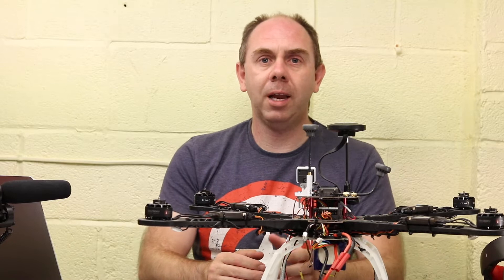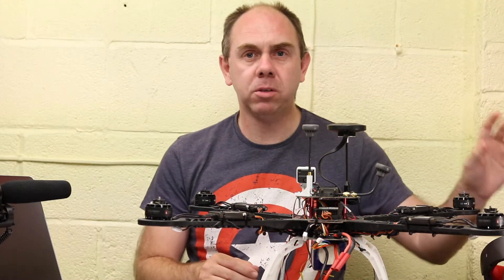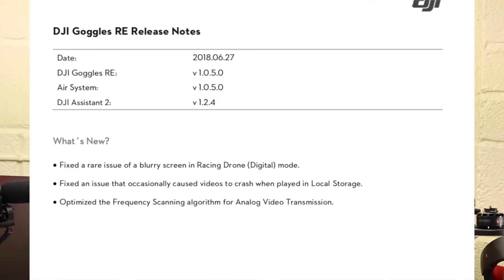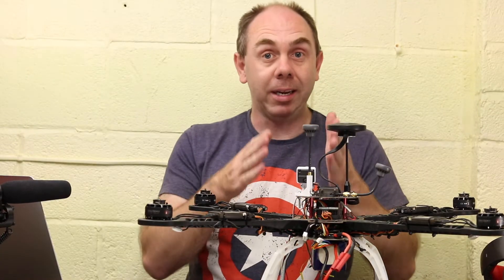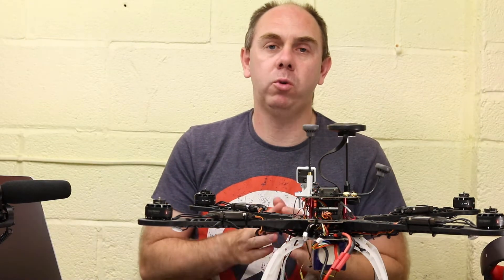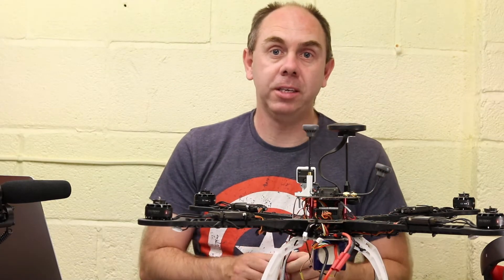Looking at the new firmware, last week they pushed out version 1.0.5.0 with a few updates mostly for the Goggles themselves. DJI say it fixed a rare issue of a bleary screen in racing drone digital mode, fixed an issue where it occasionally caused video to crash when playing logs in storage, and they have optimised the frequency scanning algorithm for analogue video transmission. I have checked that over the last day or so and it definitely seems better at locking on to analogue signals when using the channel scan on the Goggles RE, so that is a bit of a bonus.